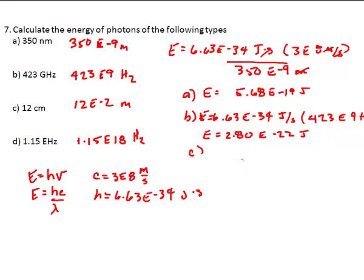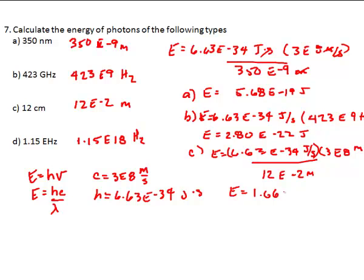C is meters again. So, it's 6.63 E to the negative 34th joules per second. Times 3E to the 8th meters per second. All this over 12E to the negative 2nd meters. So, E is equal to 1.66 joules.